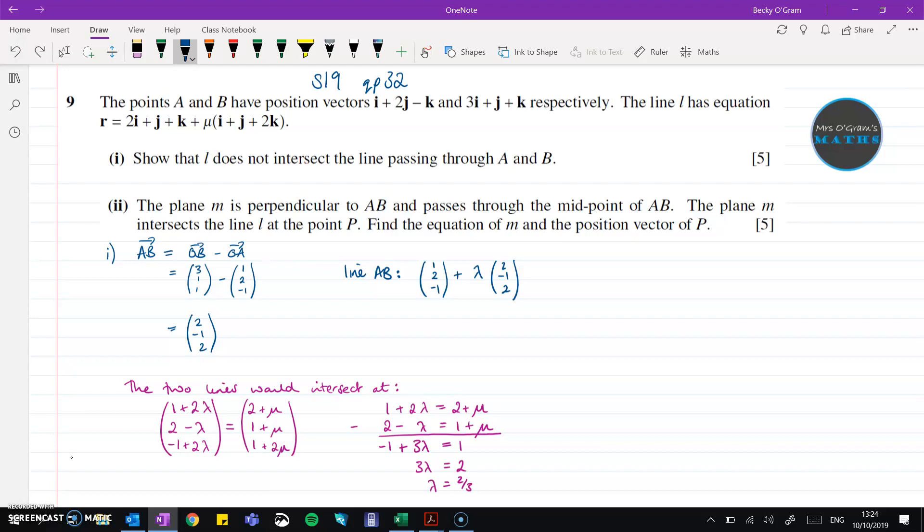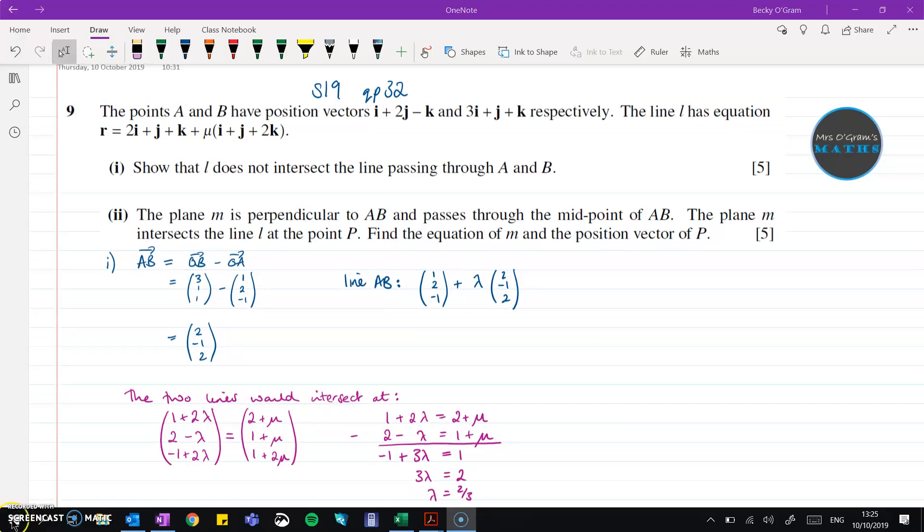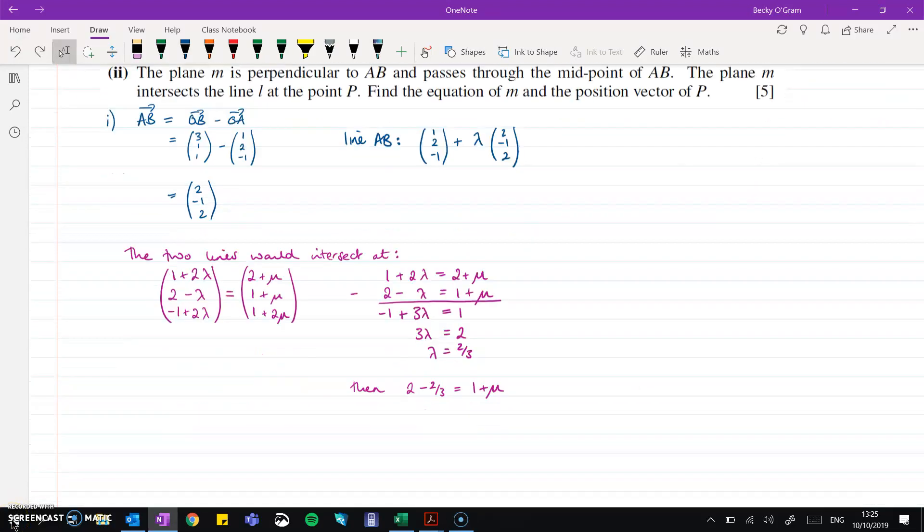If lambda is two thirds we can carry on and find what mu would need to be. So mu would have to be one third. And then we check with the third line whether that works or not. If lambda could be two thirds and mu be one third, would it work on the third line? Take out that third line from this equivalency up here, and if we put in the values of two thirds and one third, we get that a third equals five thirds. So that's not consistent with the solution we had before. Therefore there's no point of intersection.